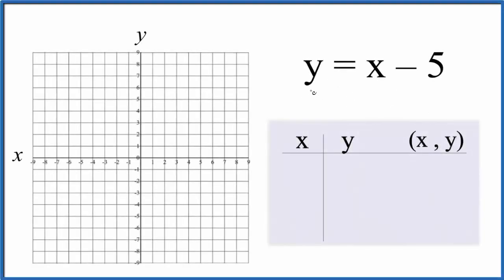In this video, we'll graph the linear equation y equals x minus 5. We'll do it two ways. First, we'll put values in for x, get the corresponding values for y, and then we'll graph those points.